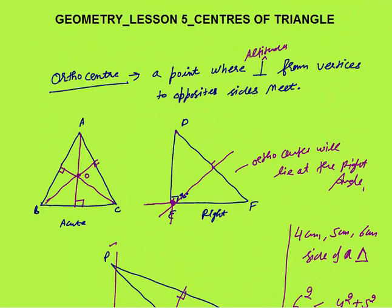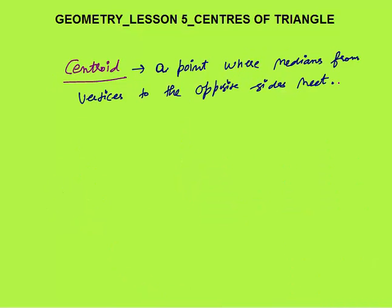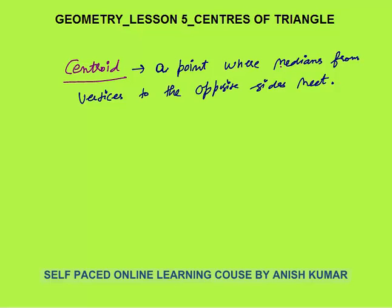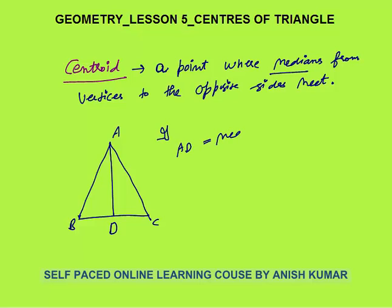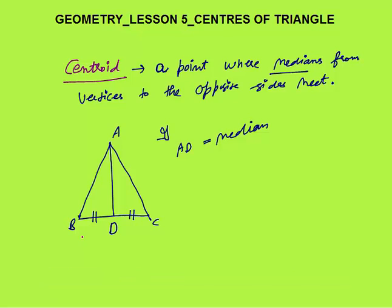Next is the centroid — this is the point where medians from vertices to opposite sides meet. A median is a straight line drawn from a vertex to the opposite side that divides the opposite side into two equal parts. If AD is a median, then BD equals CD. A very important property: a median divides the triangle into two triangles of equal area.